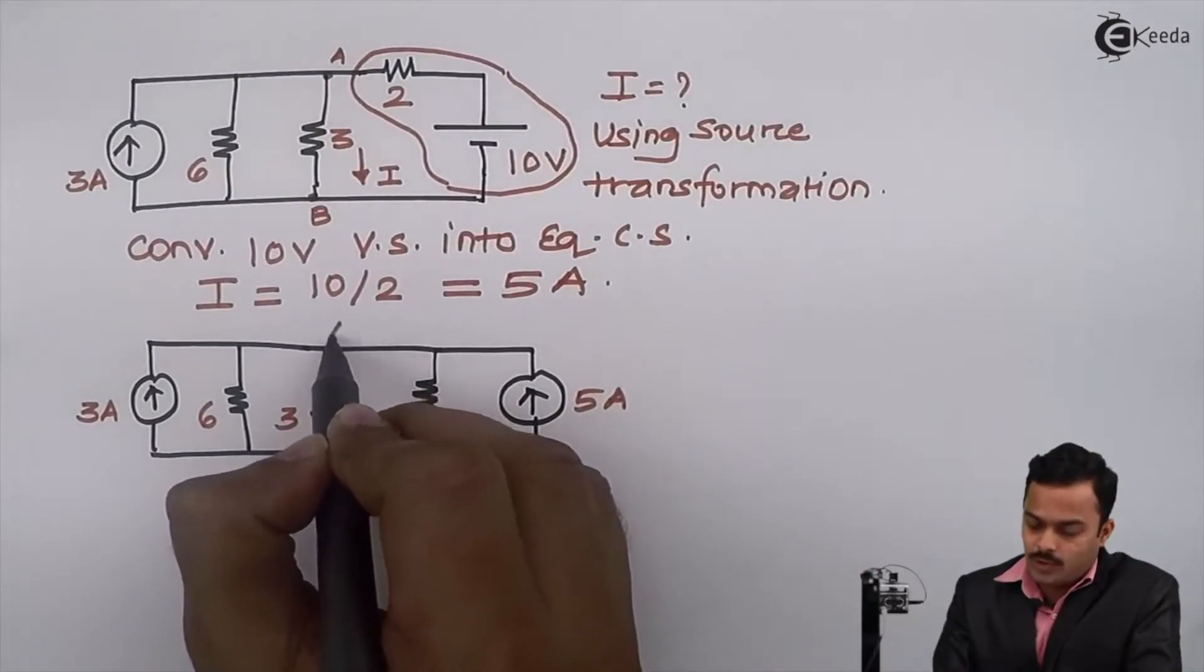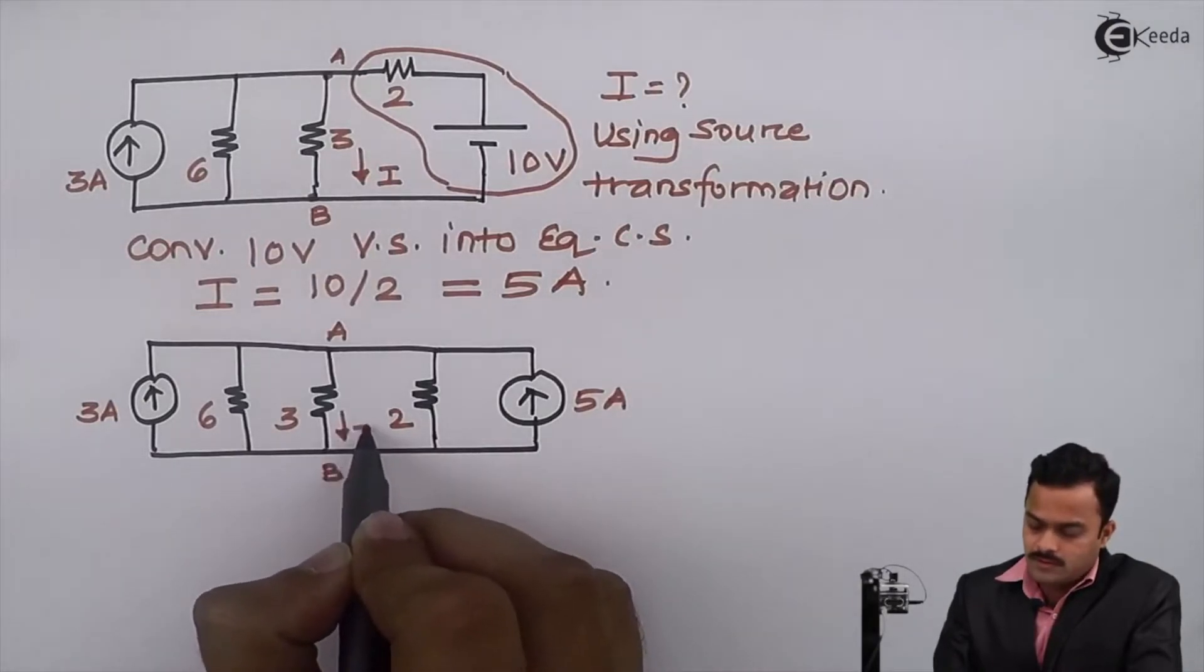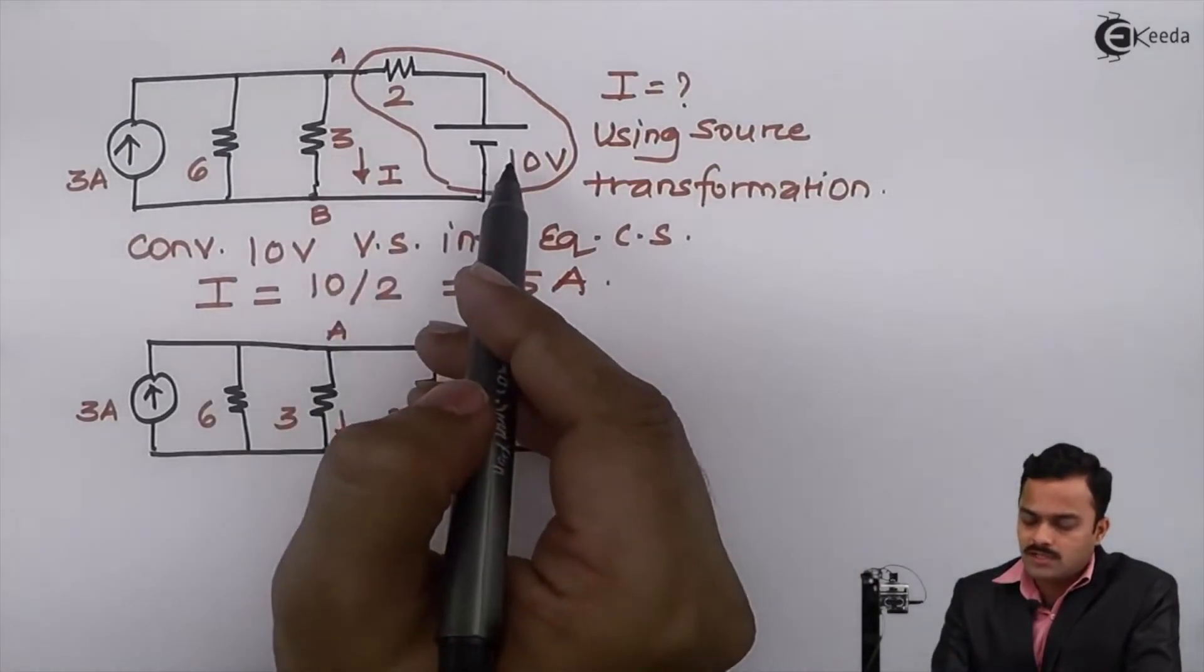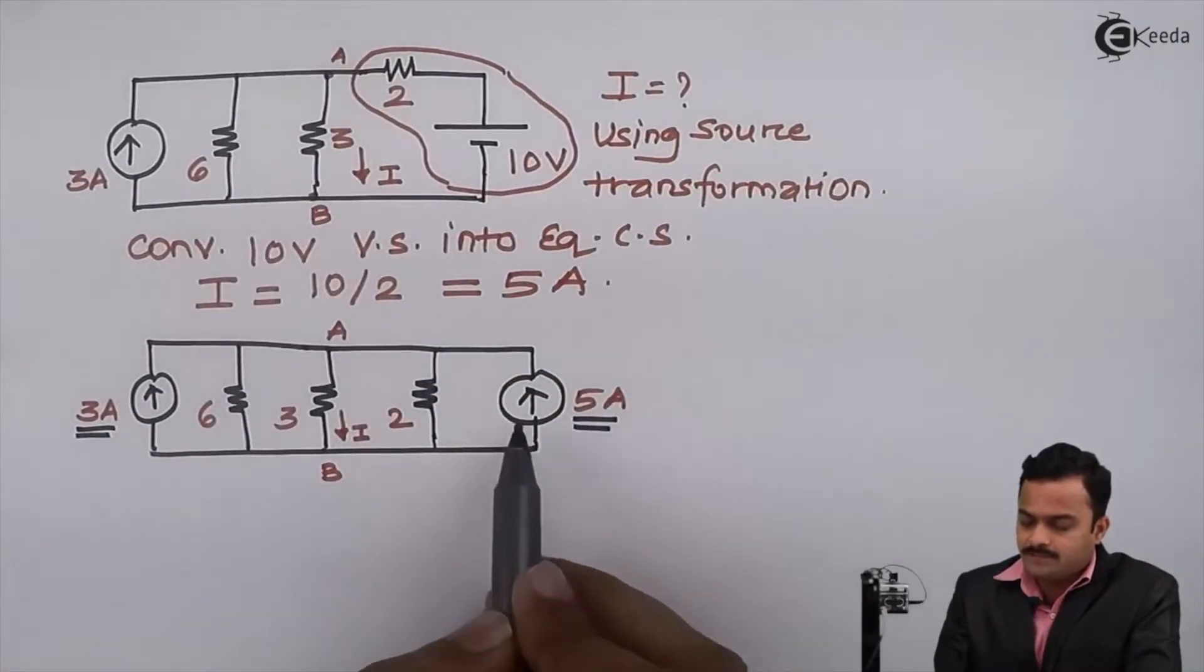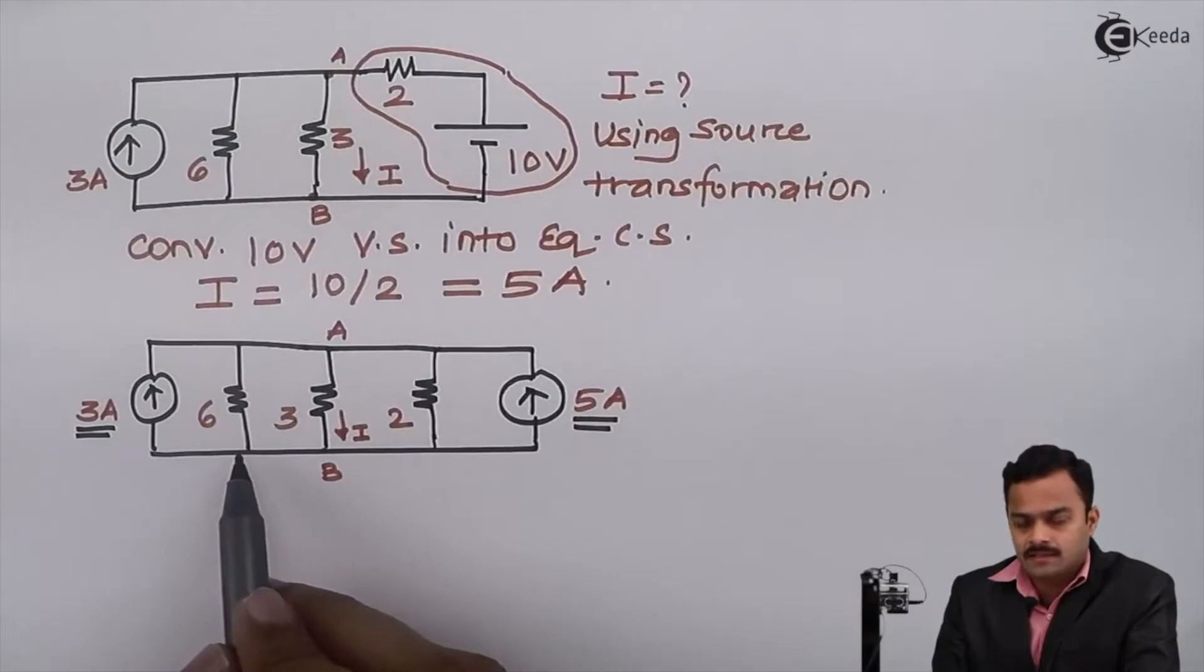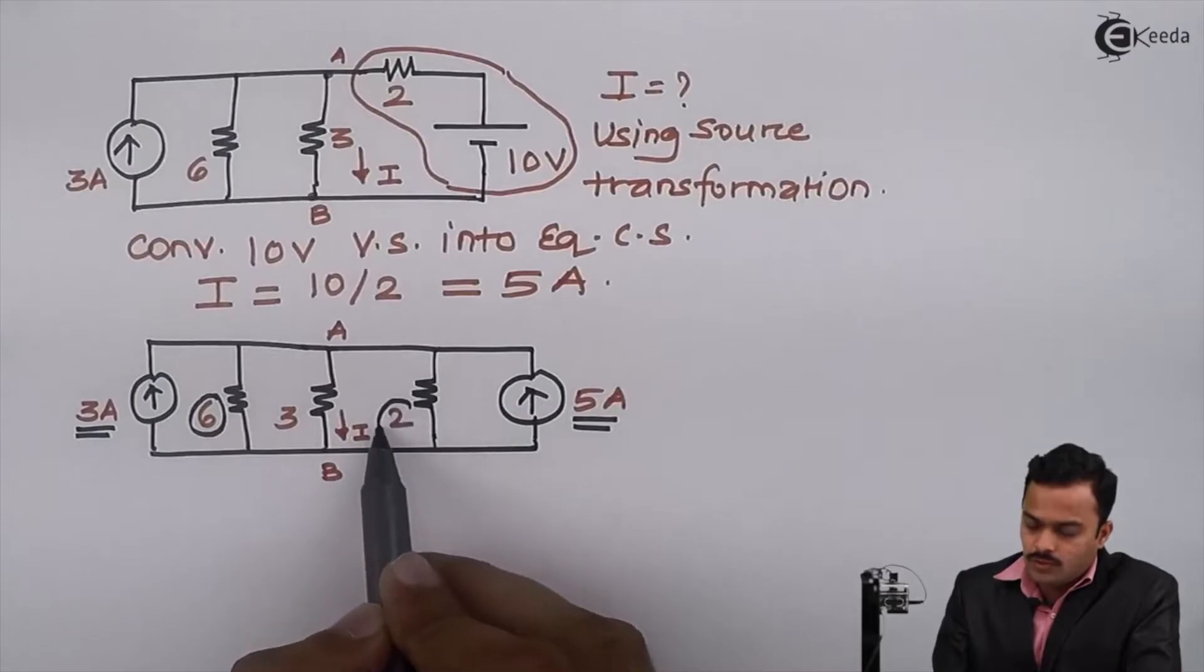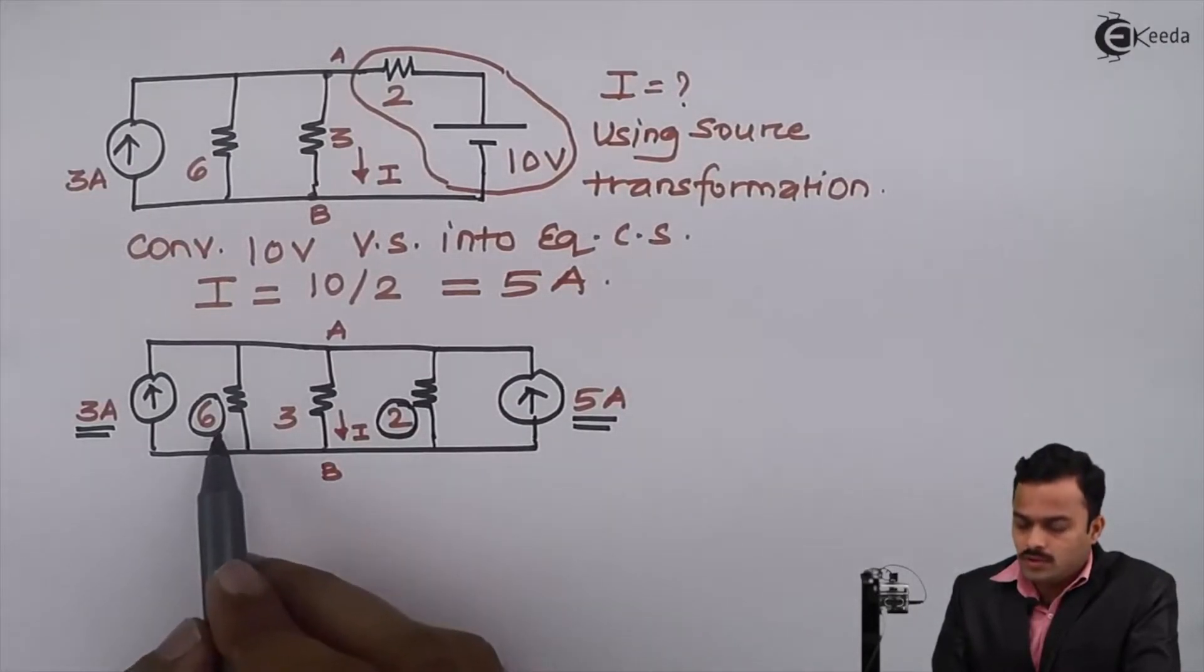Remember, I am not touching this part because I want this current I. Now the advantage of converting voltage source into current source is that this 3 ampere and this 5 ampere are in parallel and contributing currents in the same direction. At the same time, this 6 ohm and this 2 ohm are in parallel, so that circuit can be reduced.